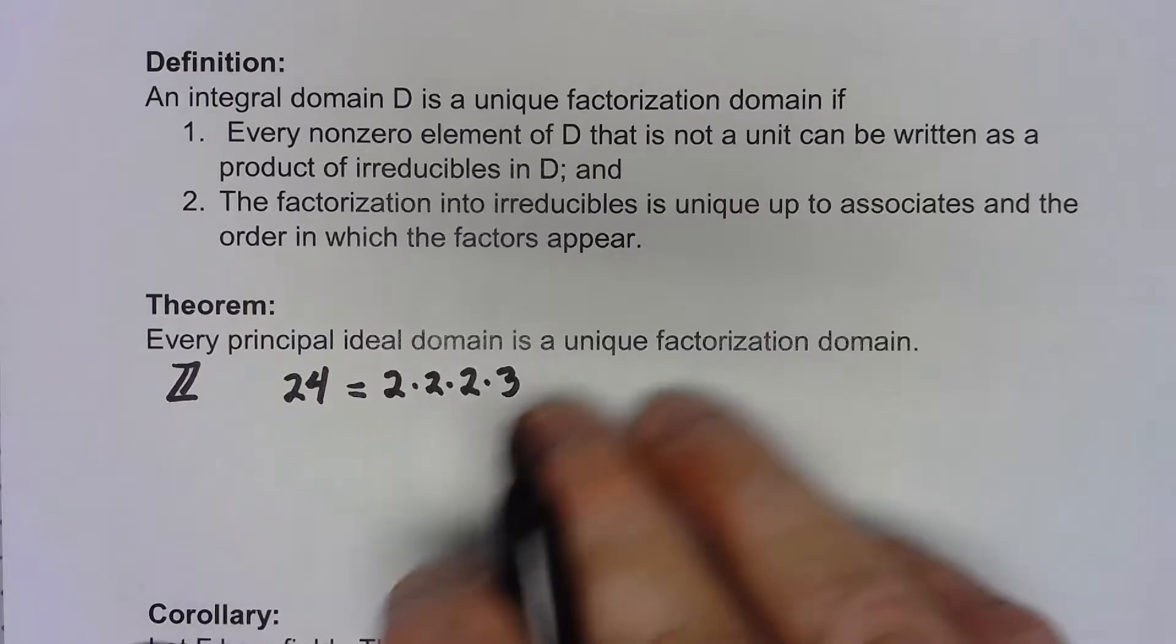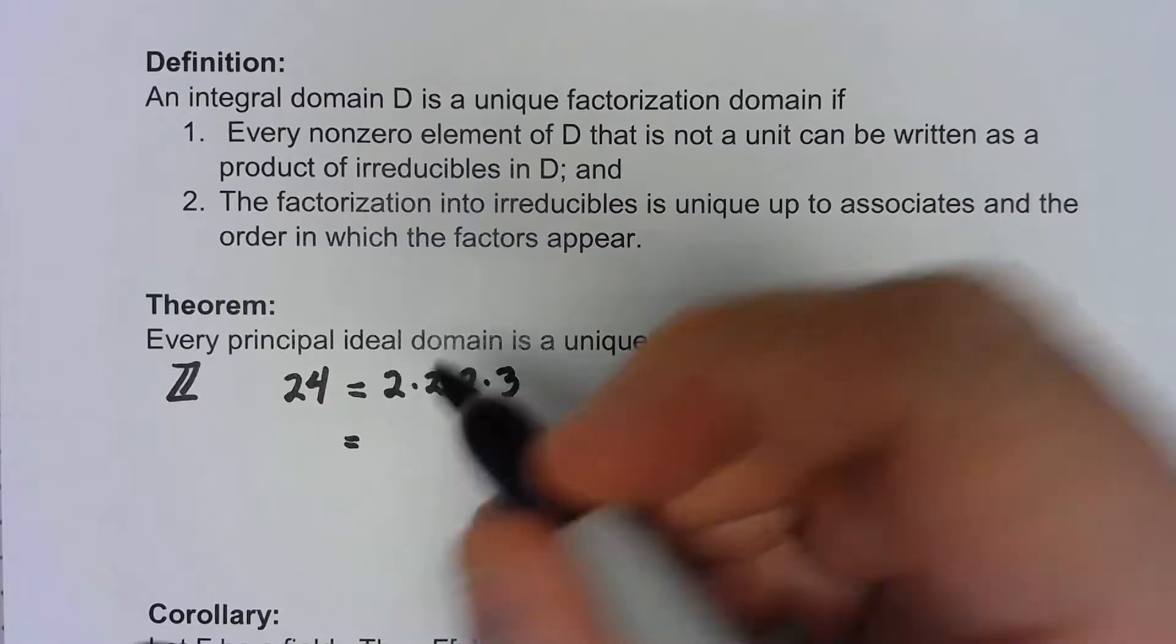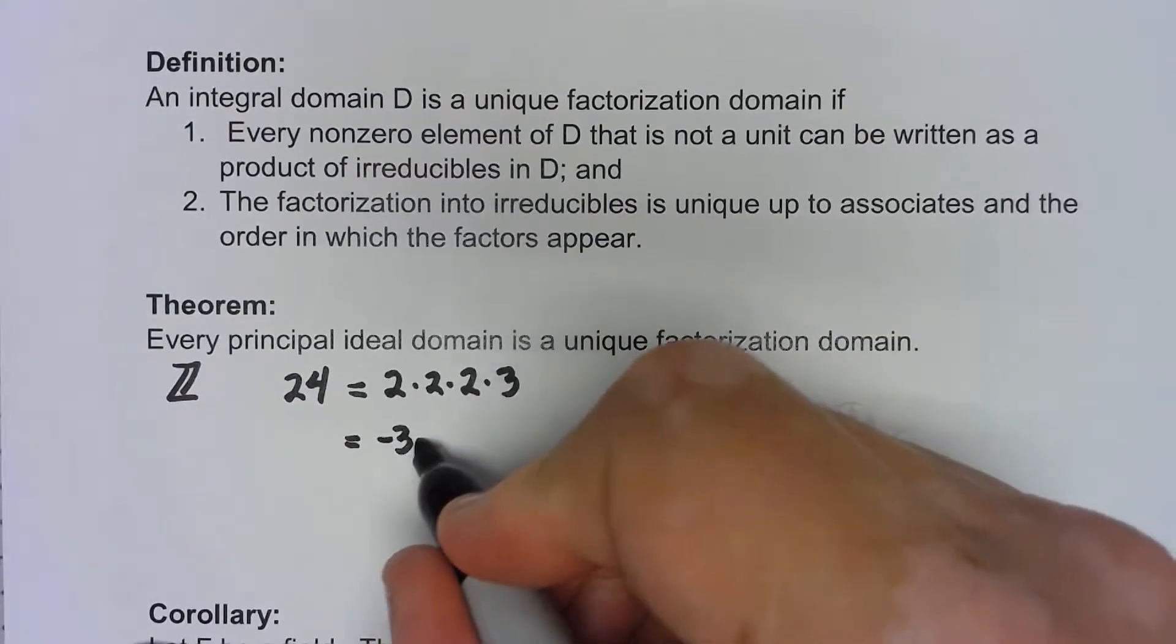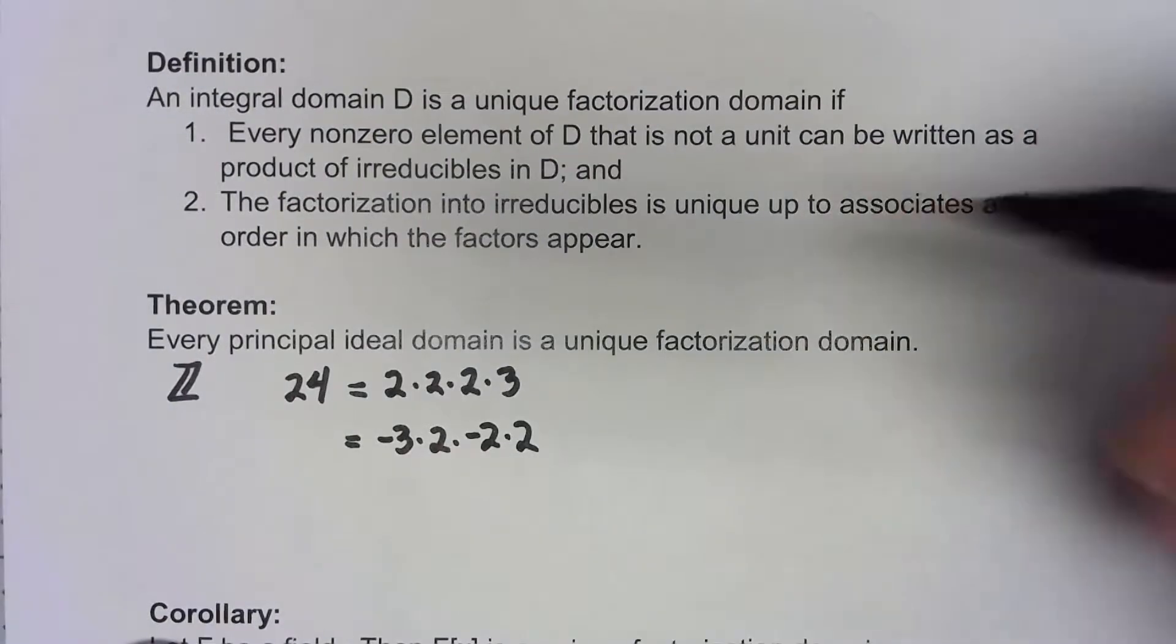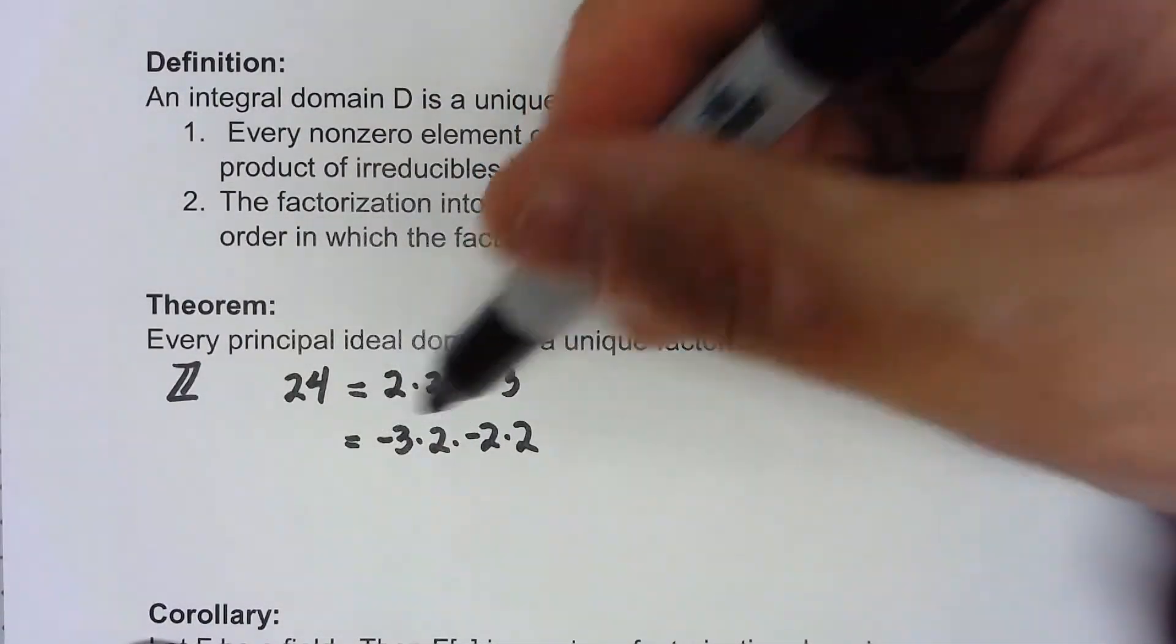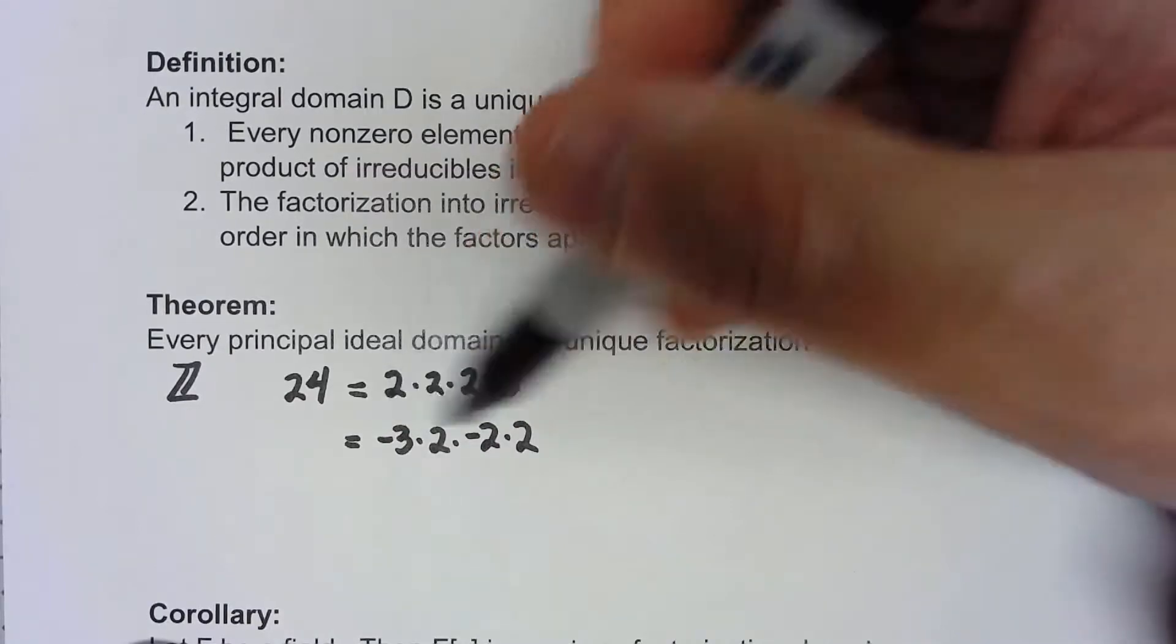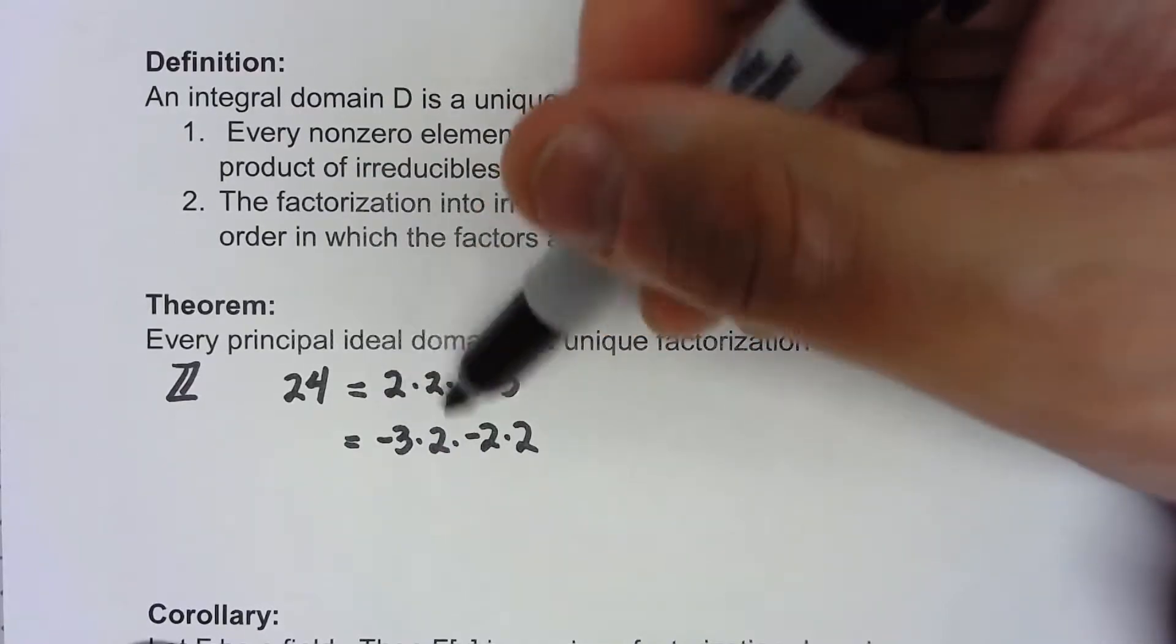Now this whole thing, it's not completely unique because I could do something like negative 3 times 2 times negative 2 times 2 and it's effectively the same. Again it comes back to these things being associates. The order can change and things can be a unit off from each other but otherwise we're fine.